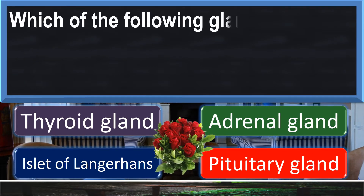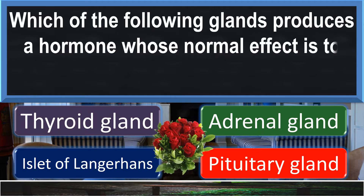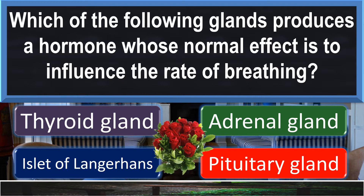Which of the following glands produces a hormone whose normal effect is to influence the rate of breathing?